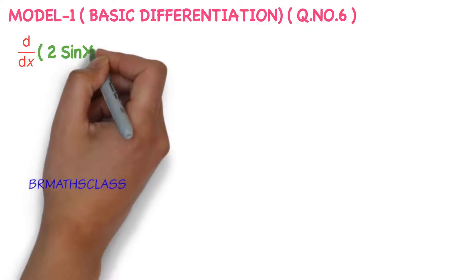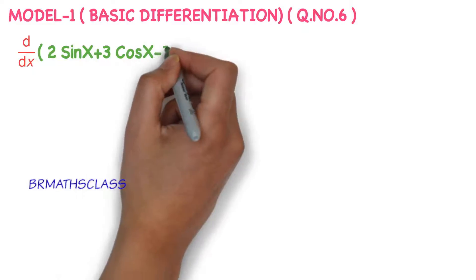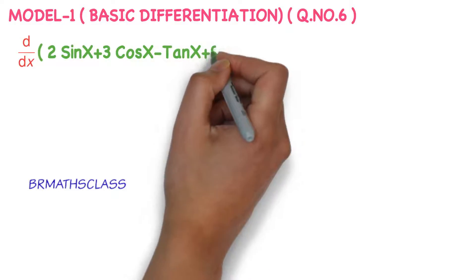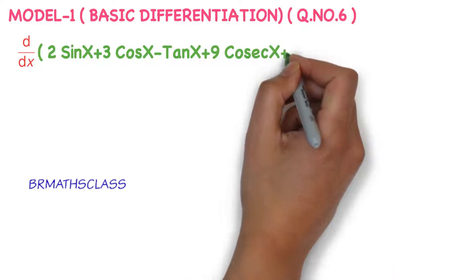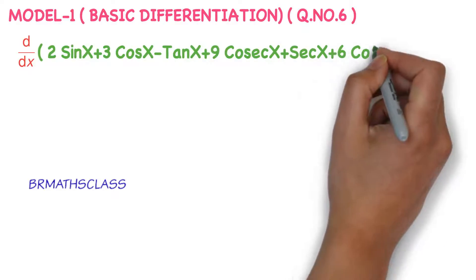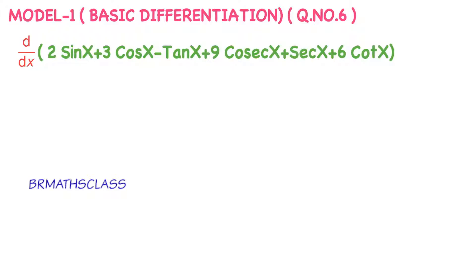Observe this question: derivative of 2 sin x plus 3 cos x minus tan x plus 9 cosec x plus sec x plus 6 cot x. In this problem, you can observe that all 6 trigonometric functions are present. How do we differentiate this expression?